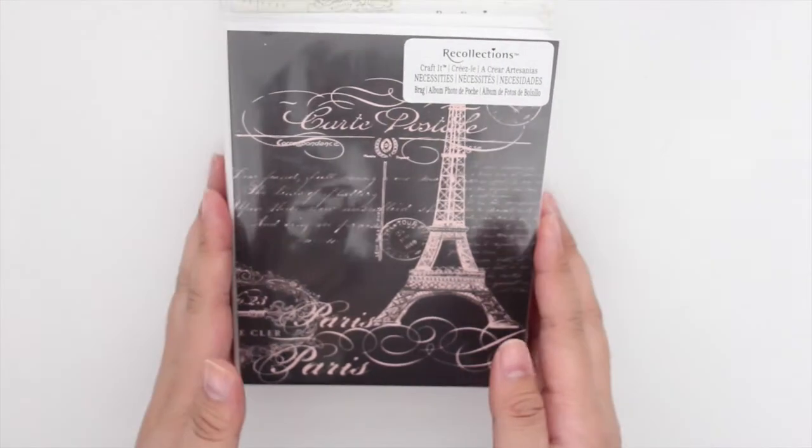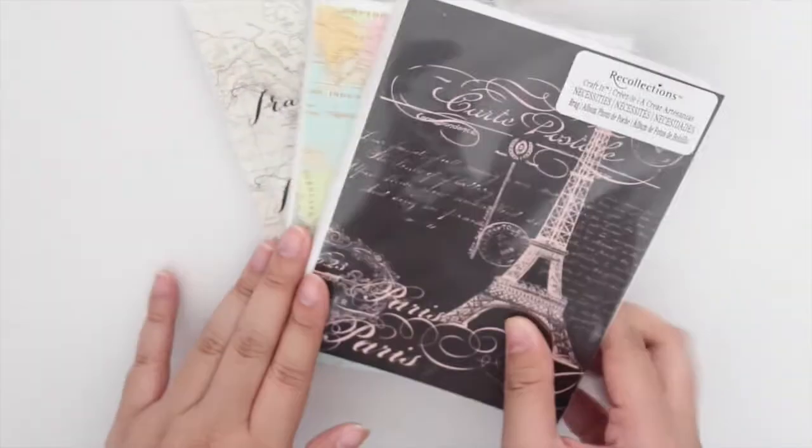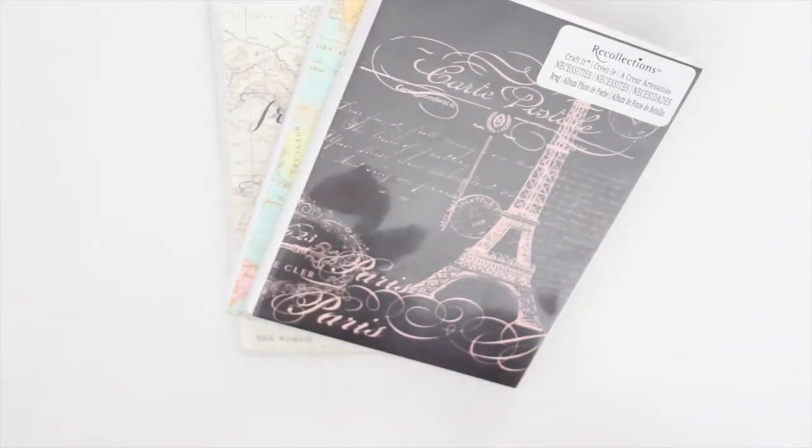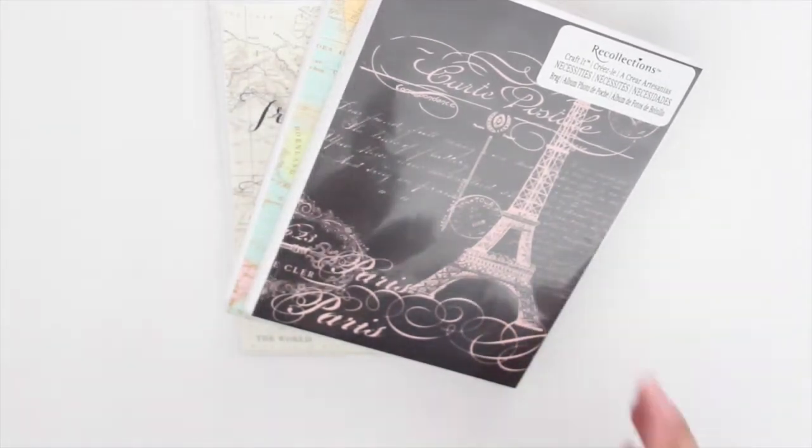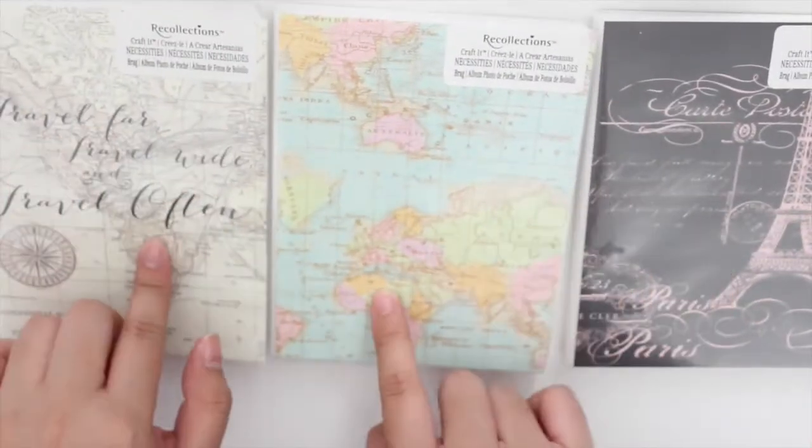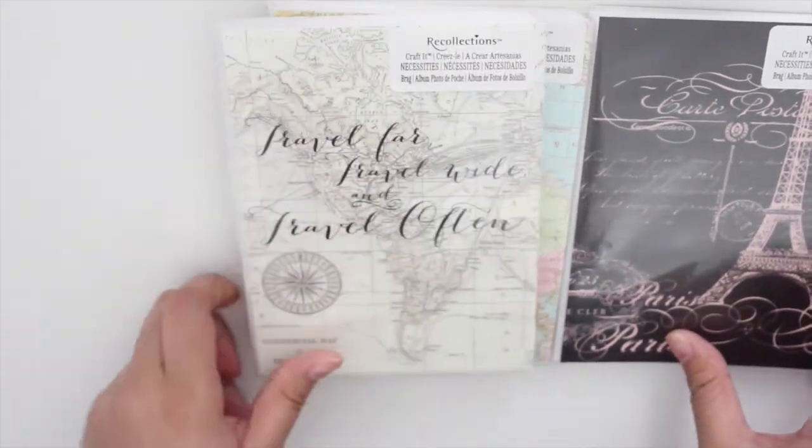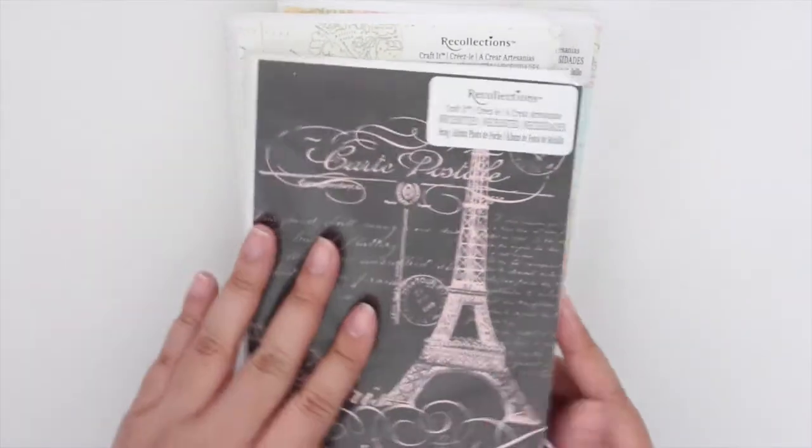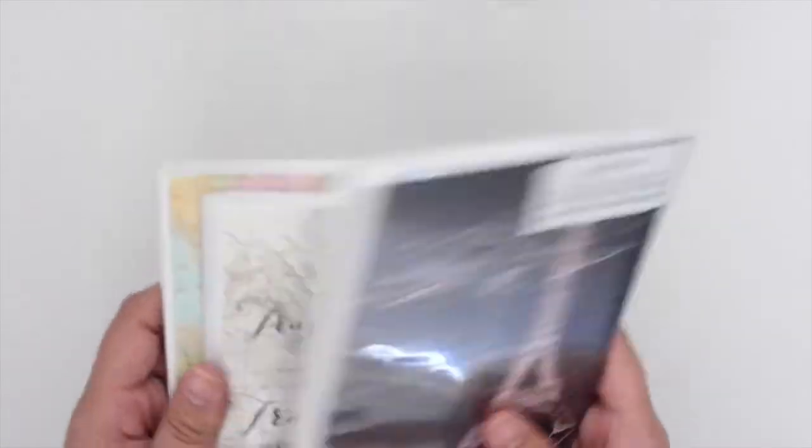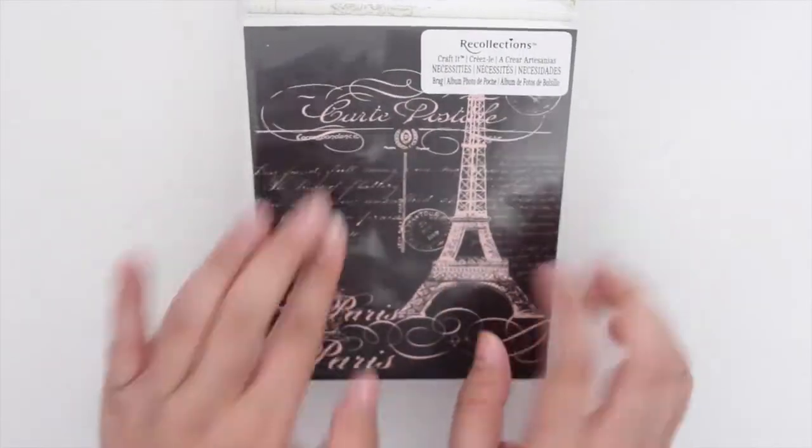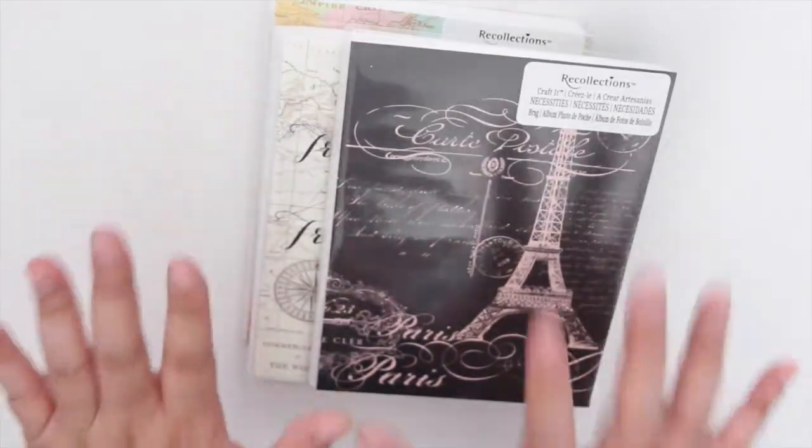Starting off with Michaels, I was looking for the new happy planners but unfortunately they didn't have any. I was looking for these photo albums and they were on sale - these were 79 cents each, I believe. I'm gonna be using them to store stickers. I love these photo albums, these little albums are my favorite. You guys should definitely keep a lookout at your Michaels because these were really cheap.